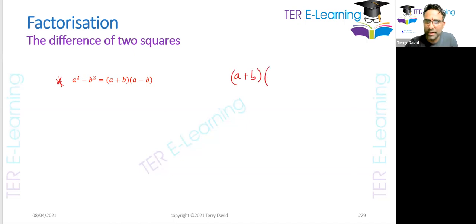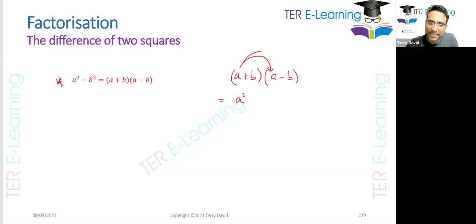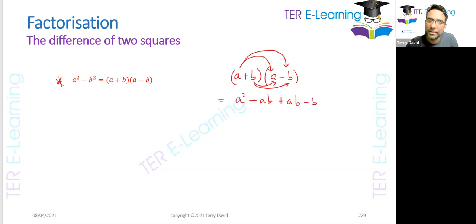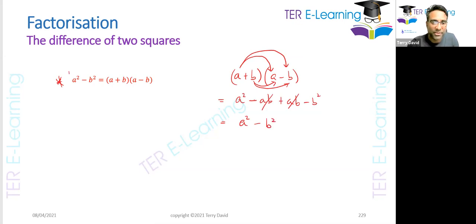If I have (a plus b) and I want to multiply that by (a minus b), here's how you multiply brackets like this. Take the first term in the first bracket and multiply by the first term in the second bracket: a by a gives a squared. Then a by minus b gives minus ab. Then b by a gives plus ab. And b by minus b gives minus b squared. If we simplify this, we get a squared; the minus ab plus ab cancels to zero, and we're left with minus b squared. So a squared minus b squared equals (a plus b)(a minus b).